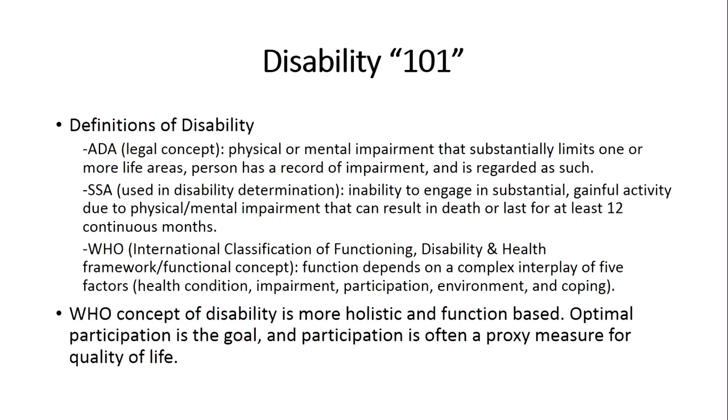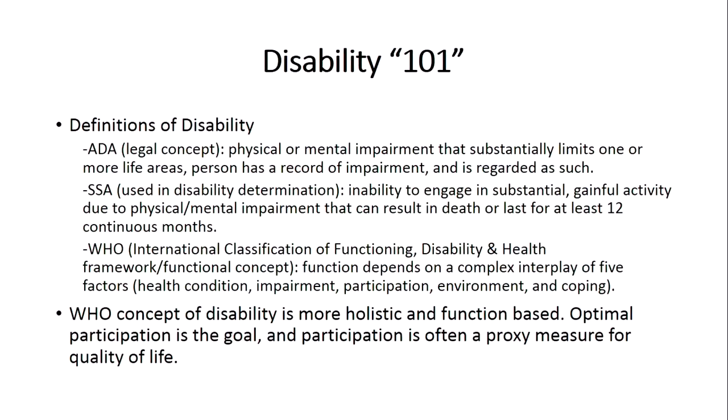The final definition we'll consider is from the World Health Organization, called the International Classification of Functioning, Disability, and Health. It's a framework that speaks to functioning as a complex interplay of five factors: the health condition — what malady or abnormality causes the disability; the level of impairment or functional limitation; what the resulting participation ends up being; environmental concerns; and coping. This WHO definition is much more holistic and function-based. Optimal participation is the goal, and participation is often a proxy variable used to approximate quality of life.